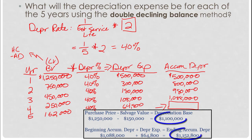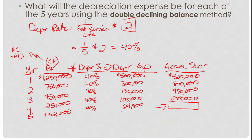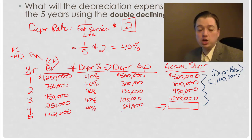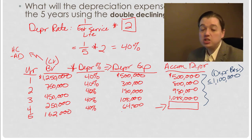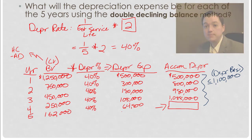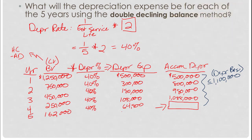As you worked through the table, you should notice a problem with the last year's accumulated depreciation balance. If I take $1,088,000 plus $64,800, I'll end up much higher than the depreciation base of $1,100,000. This leads us to a key rule: accumulated depreciation must be less than or equal to the depreciation base. So in year five, instead of the full $64,800, I only recognize $12,000 of depreciation expense so that total accumulated depreciation equals exactly $1,100,000.